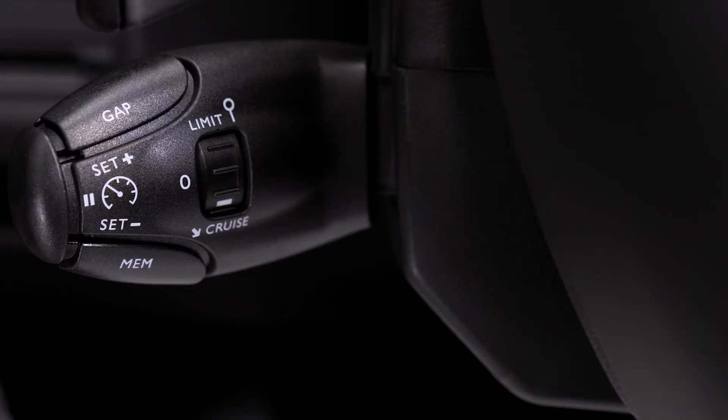You can memorize the speed displayed thanks to speed sign recognition as the reference speed for the speed limiter or regulator by pressing twice on the memory mem button control pod behind the steering wheel.